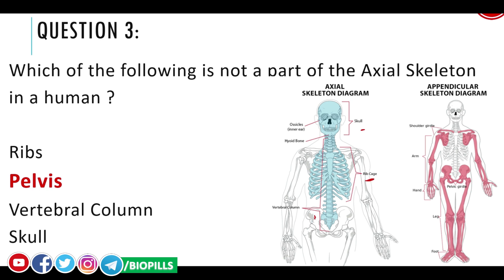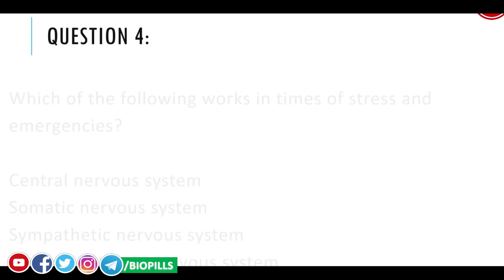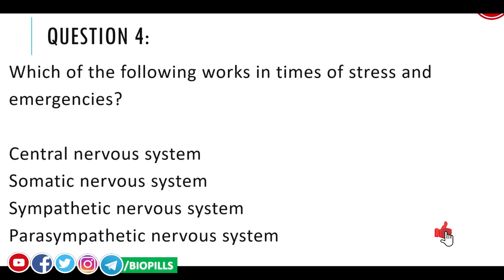The axial skeleton also includes the sternum, or breast bone. The appendicular skeleton is made up of the bones of the upper arm and lower arm, in addition to the pelvis. So the pelvis is not part of the axial skeleton — it is part of the appendicular skeleton.